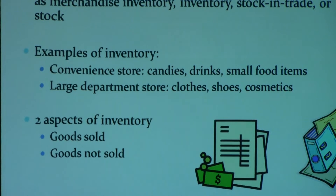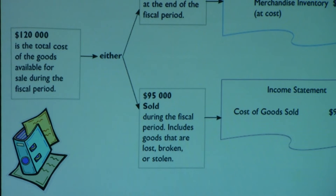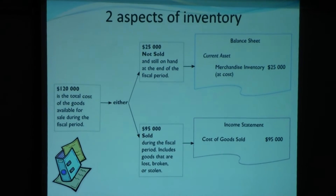There are two aspects of inventory which we really need to understand. A business purchases inventory with the intention of selling it at a profit. However, not all inventory is sold within a given period of time. At any given point — especially when the year ends — you will have items or goods that have been sold during the year, and you will also have items or goods that have not been sold during the year. These two aspects of inventory are graphically pictured here.